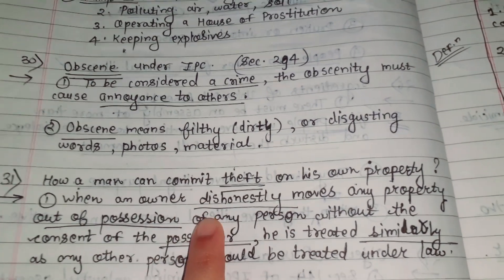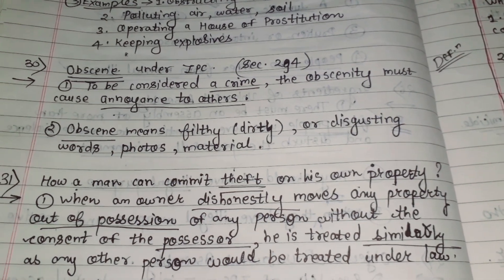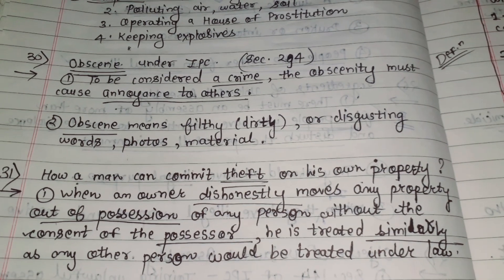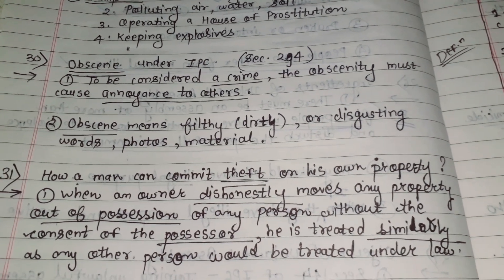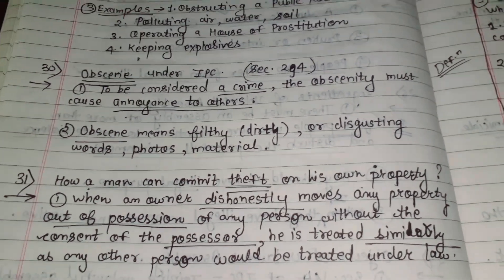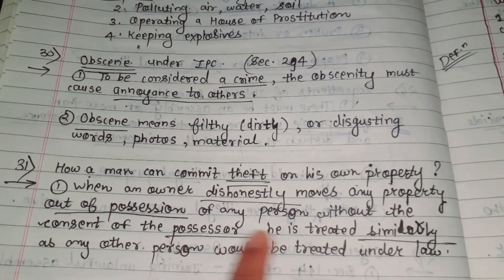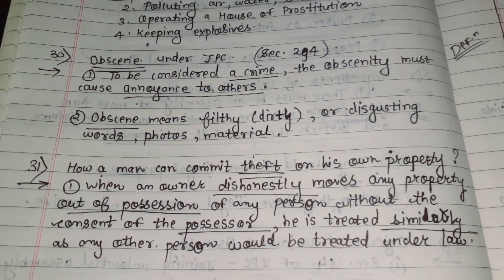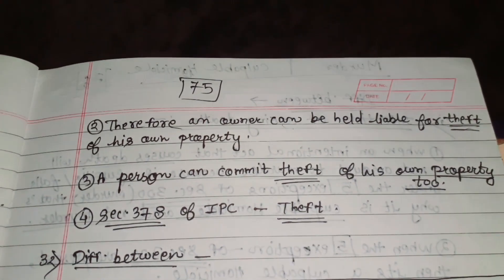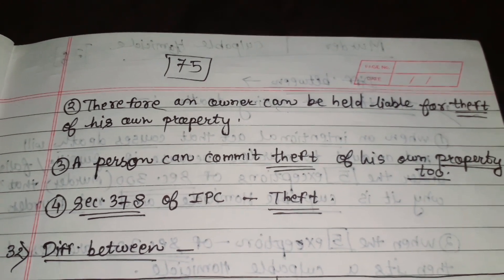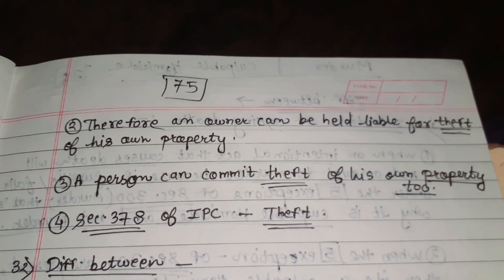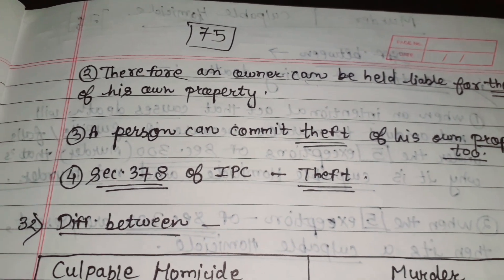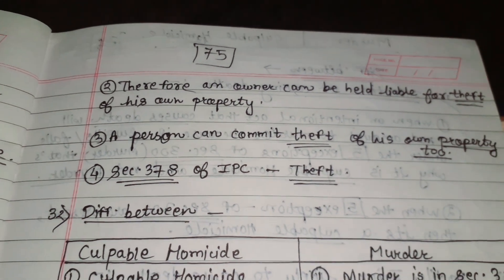The owner of the land who has dishonestly moved any property out of the possession of another person — where possession belongs to that other person — without taking his permission, is treated the same as any other person under the law. Therefore, an owner can be held liable for theft on his own property. A person can commit theft on his own property too, as given in Section 378 of IPC.